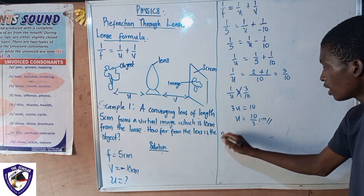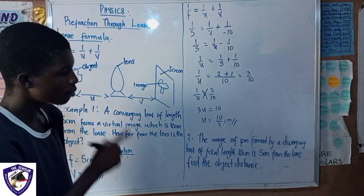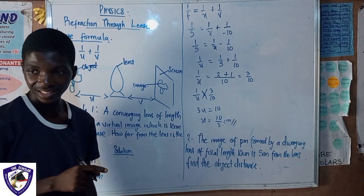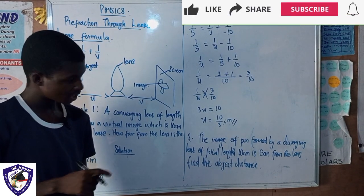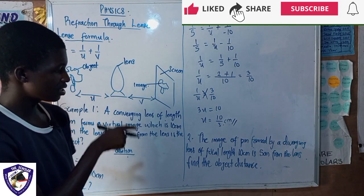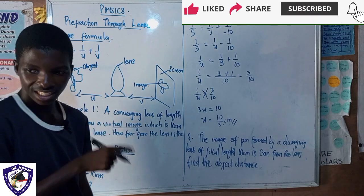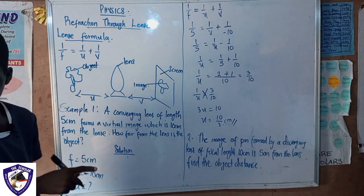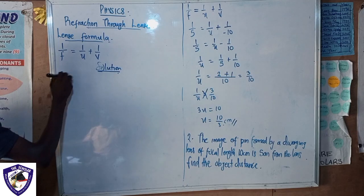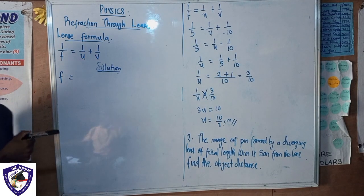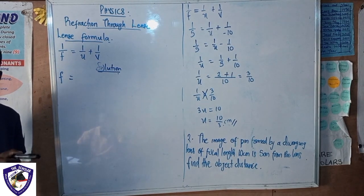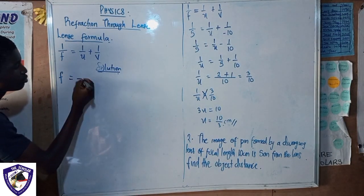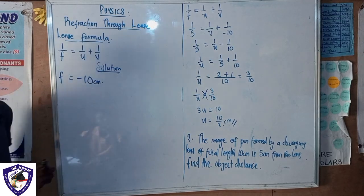For better understanding, let us solve another question. Here we have: the image of a plane formed by a diverging lens of focal length 10 centimeters is 5 centimeters from the lens. Find the object distance. Now, the focal length of a diverging lens always carries a negative sign, so f = negative 10 centimeters.